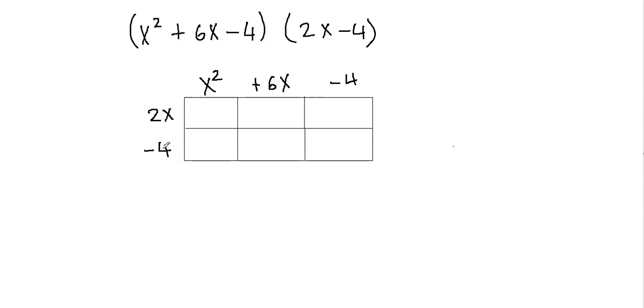If you switch between them, if this goes on top, then you will have two columns but three rows because this one has three terms. So you will have x squared, then positive 6x, and then negative 4. So you will have three rows but just two columns because you have two terms here, 2x minus 4. So you can switch between them.